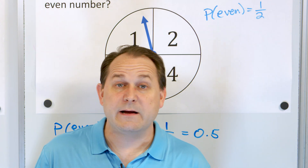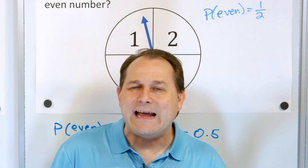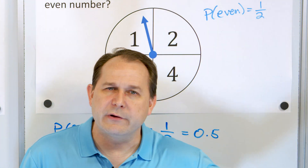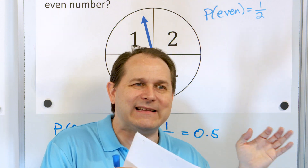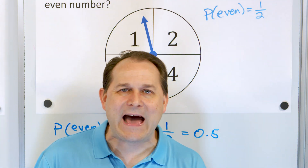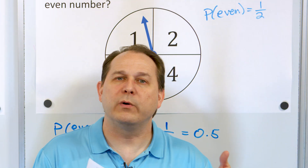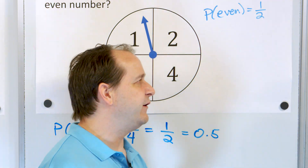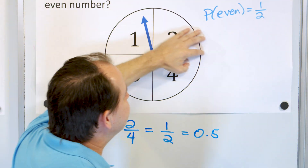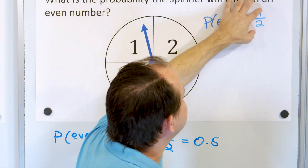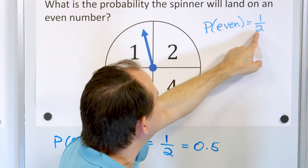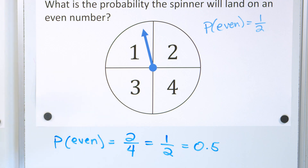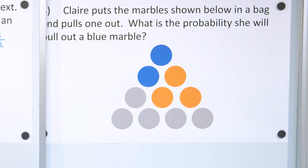If you actually did it, it might be 499 or 498 or 501. But if I ran it a million or a trillion times, the results would get closer and closer to landing on even numbers half the time. The more trials you do, the closer you get to the calculated probability of one half.